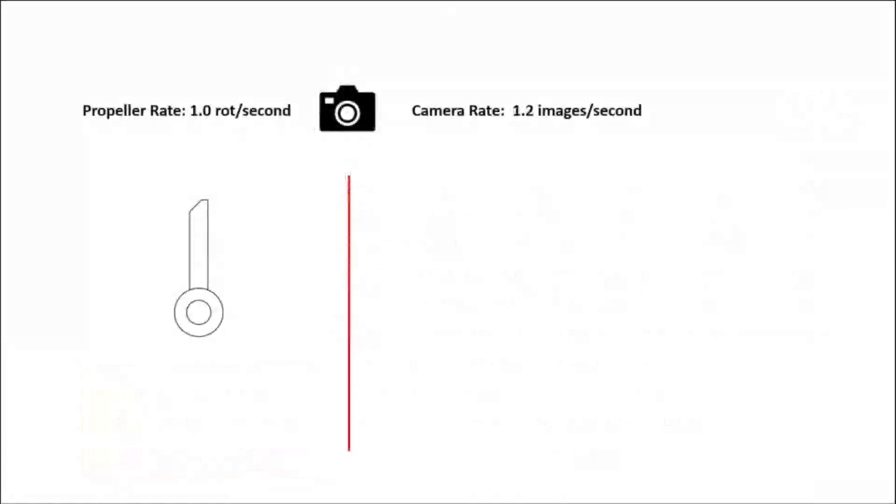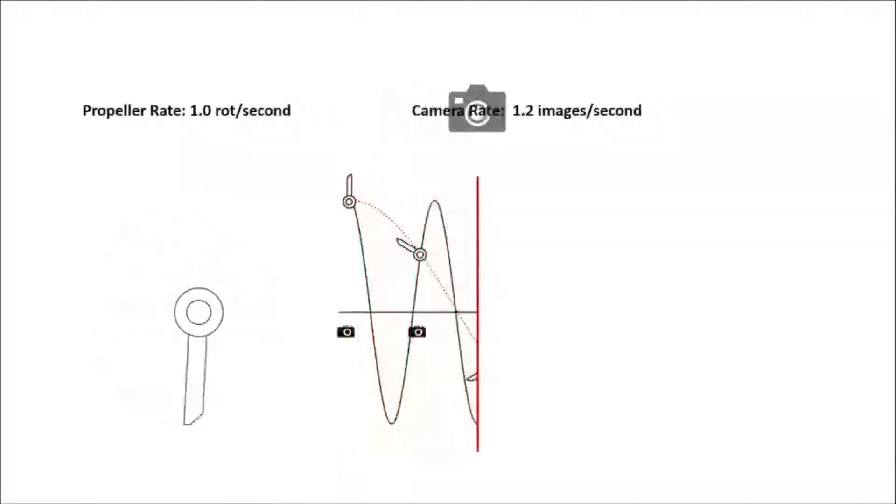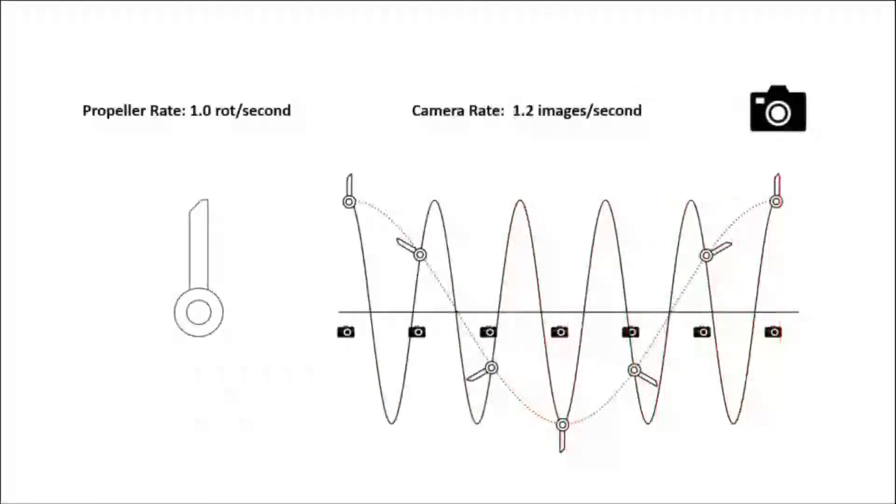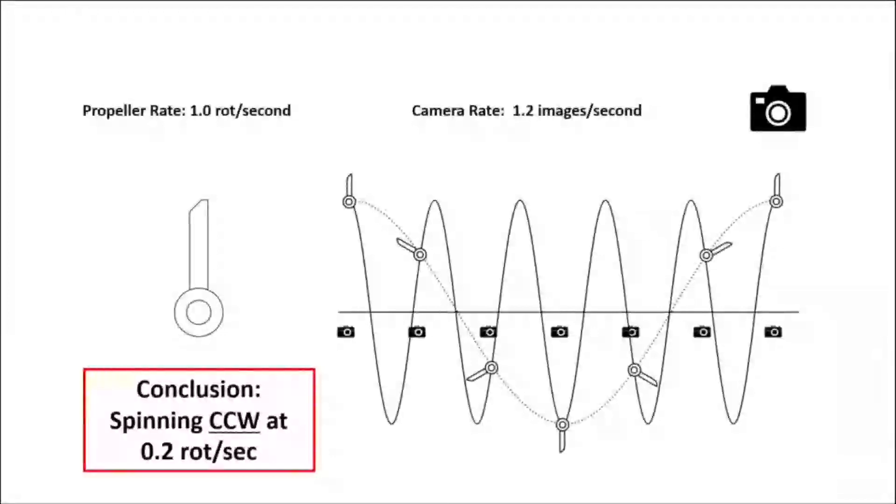And then similarly, if we took pictures slightly faster, the propeller wouldn't quite get all the way around. And flipping through afterwards, we'd see the propeller moving slowly in the opposite direction as we can see in the little images here. Here counterclockwise, opposite to the real thing, at 0.2 rotations per second. So that's where we get phenomena from a video of a propeller. The propeller starts spinning slower than the camera, reaches the camera rate, and then exceeds it. And so we'll go through those three stages and we'll see that slow down and stop and reverse.